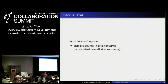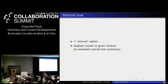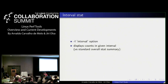With perf stat you normally specify which events you want, or use the defaults — about 20 events including cache misses, page faults, software events, hardware cache events, and hardware events — and at the end you receive the totals for that workload. Now you can use dash capital I and specify an interval, such as every 100 microseconds, to print running totals and deltas. This lets you feed the output into plotting tools and observe startup behavior separately.